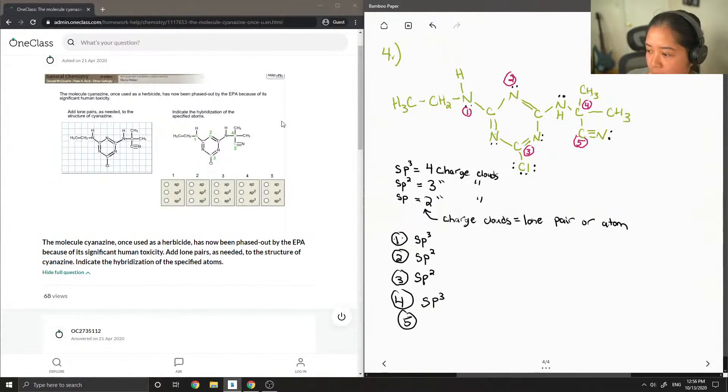And lastly, for this last carbon, there's only one, two charge clouds. And this is SP hybridization.